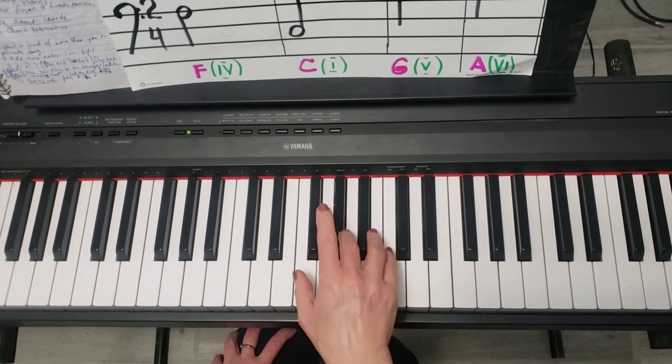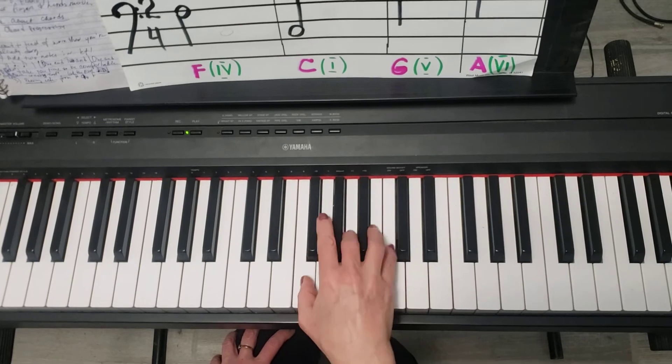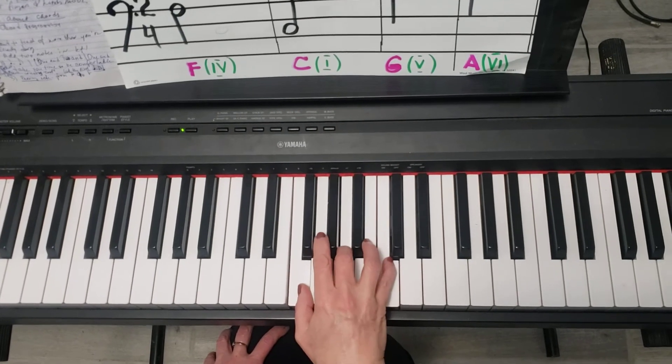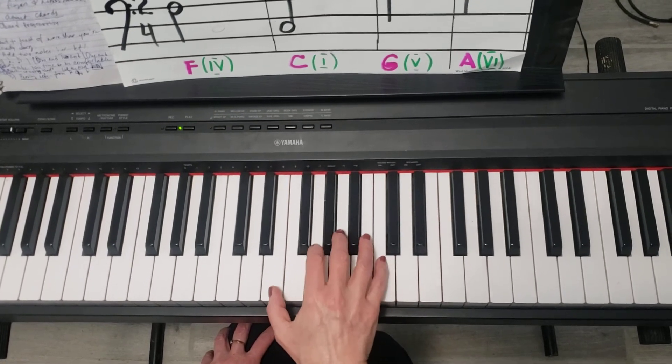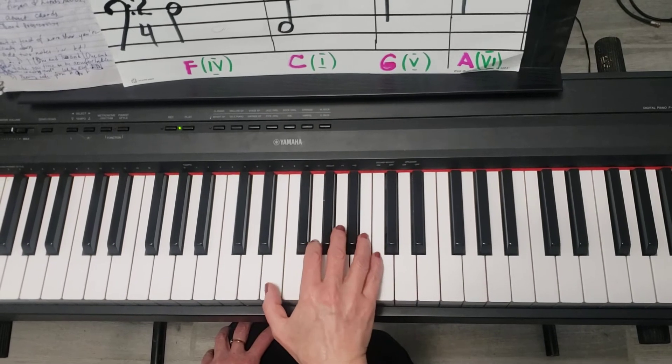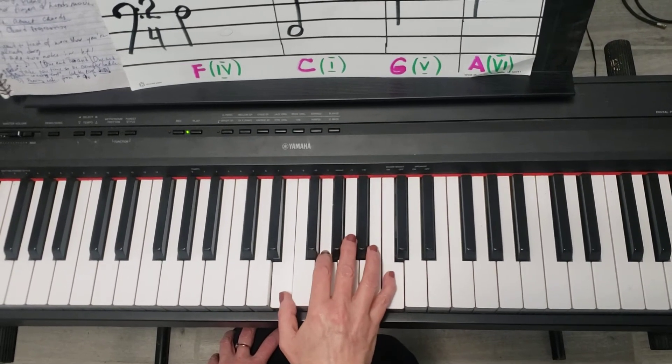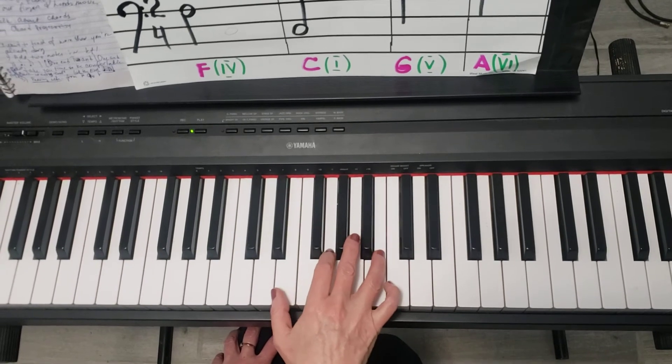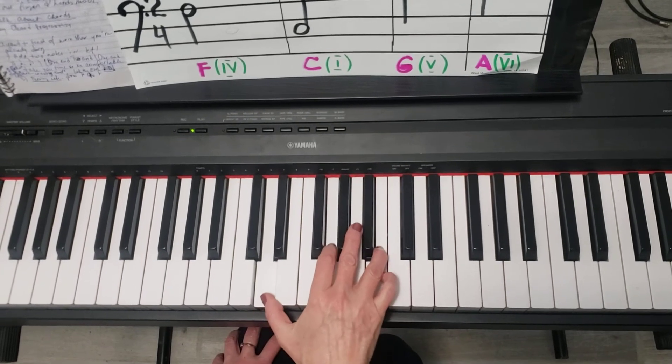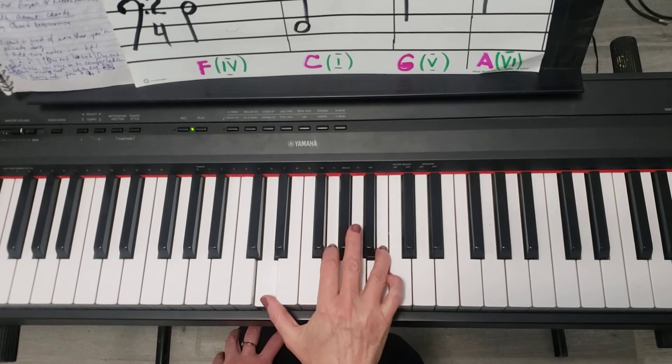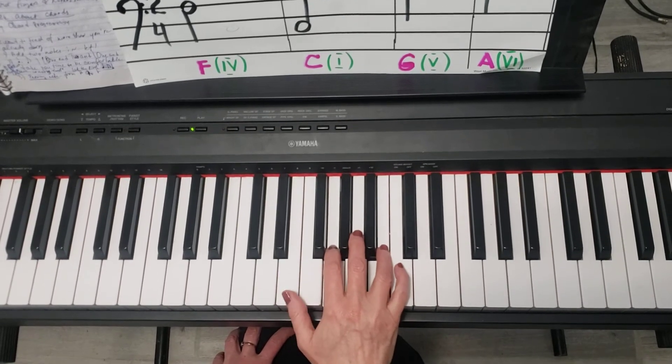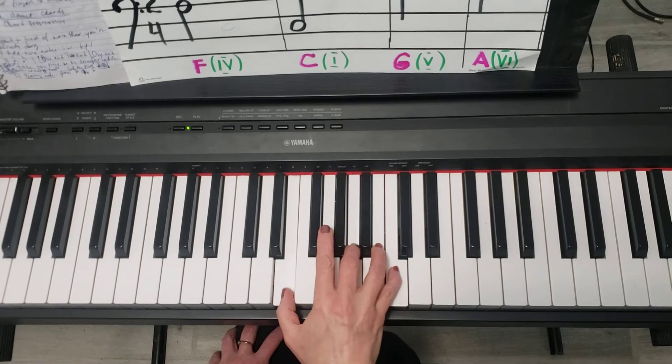So the right hand, again, first F chord two times, then C stays, these two notes go down to E, G, C, it becomes the C chord first inversion. Then G stays, C goes to B and E goes to D, it becomes the G chord second inversion. And then it goes all up, one step up to A minor chord.